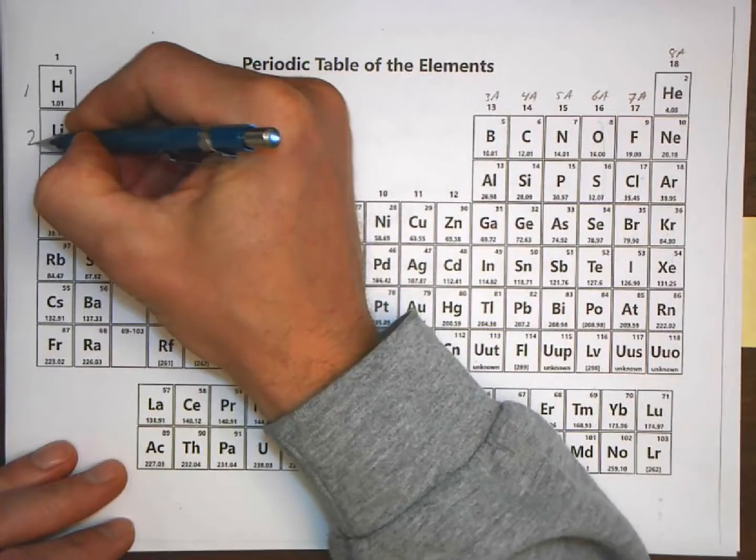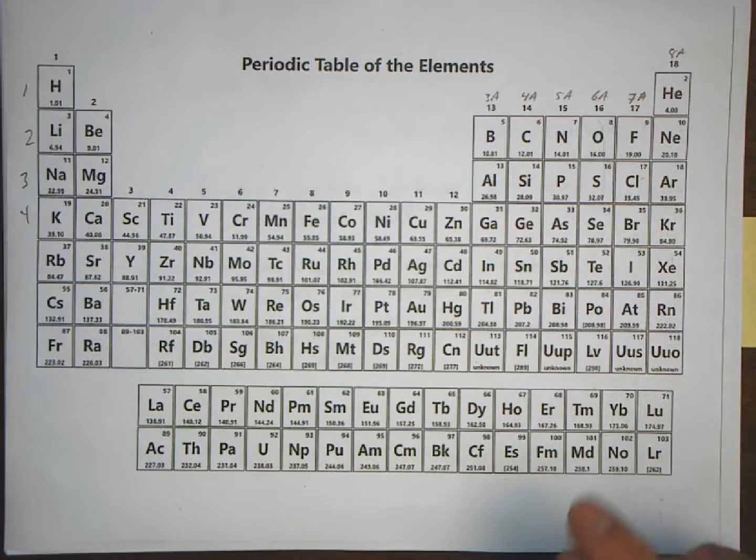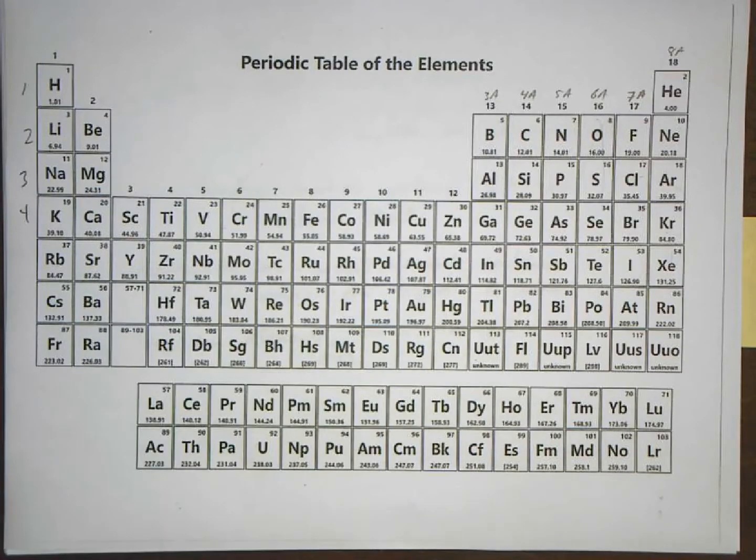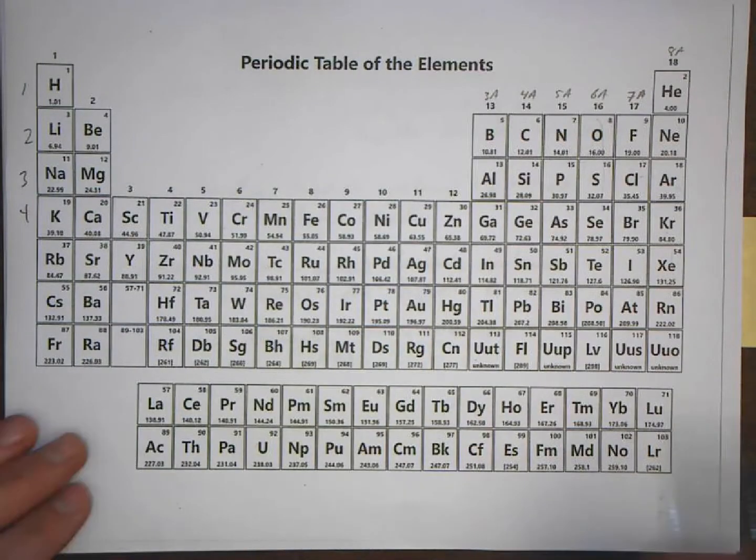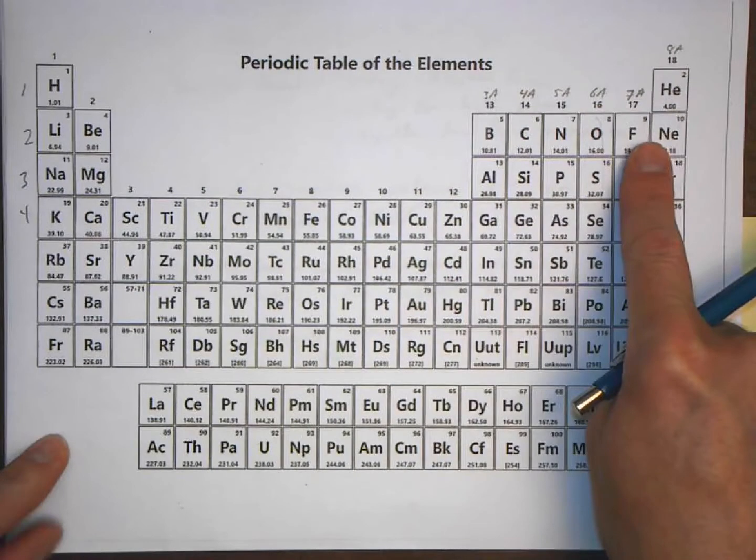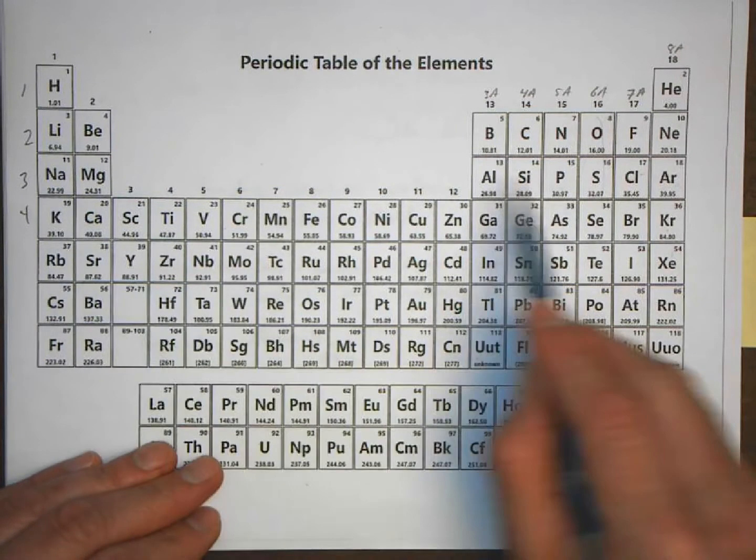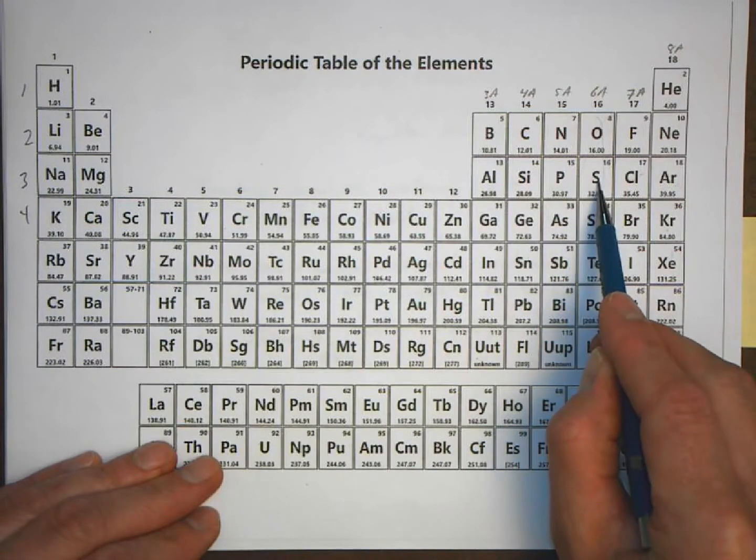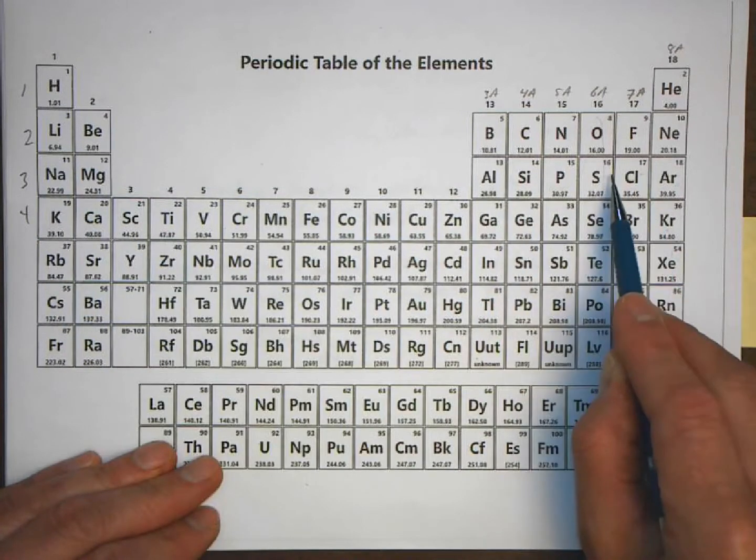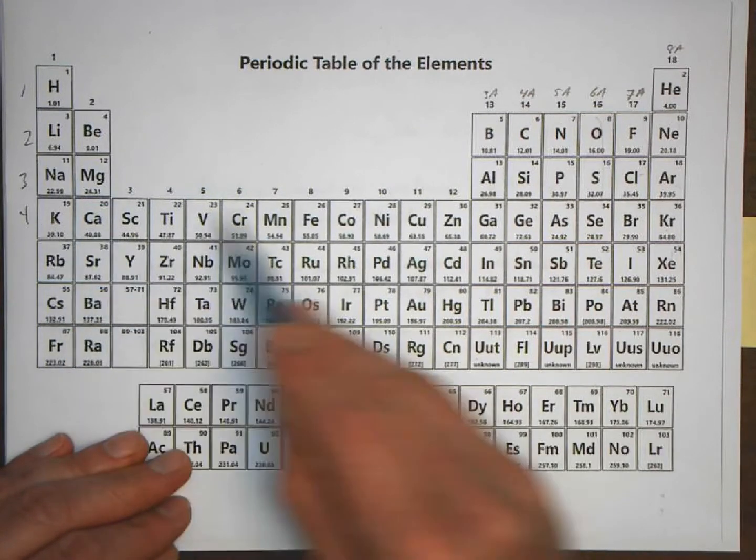As you recall, the s orbitals, the p, and the d. What we're saying is that for the main group elements, the representative elements here and here, the valence electrons are of course just the highest n value electrons. For example, if we're talking about sulfur, we're talking about the 3s and the 3p electrons. If we're talking about arsenic, we're talking about the 4s and the 4p electrons.